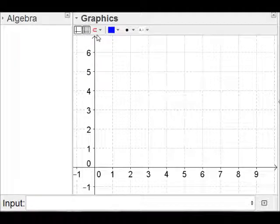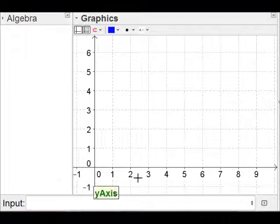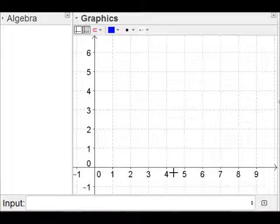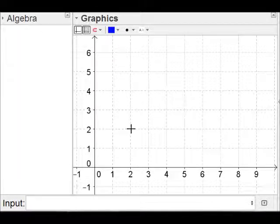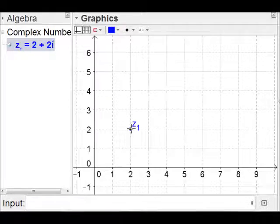The complex number x plus iy would become the coordinate pair (x, y). So if I wanted to plot the point 2 plus 2i, I would plot it as (2, 2), and if I wanted to plot the point 3 minus i, I would plot it as (3, -1).